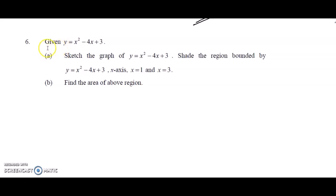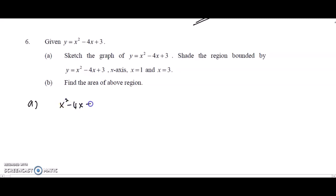Now we proceed to question 6. Given y equals x squared minus 4x plus 3, we need to sketch the graph and shade the region bounded by the curve, the x-axis, x equals 1, and x equals 3. To sketch the quadratic graph, we find the roots first by equating y equals 0 and factorizing. We get two roots: x equals 3 and x equals 1.